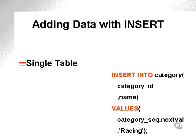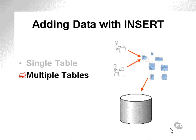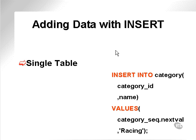Here's a simple example. I'm inserting into the category table a category ID and a name. The syntax shows that I need to specify values — here I'm using the next value on the category ID sequence and giving the category name of 'racing'. The second form of INSERT is a specialized command which allows simultaneous insertion into multiple tables, though it has restrictions due to its complexity. Let's go back to the single table INSERT statement.